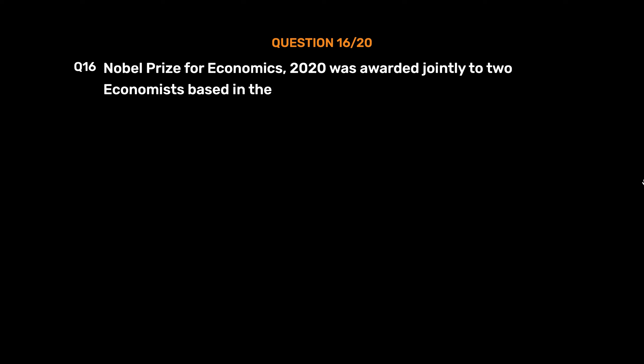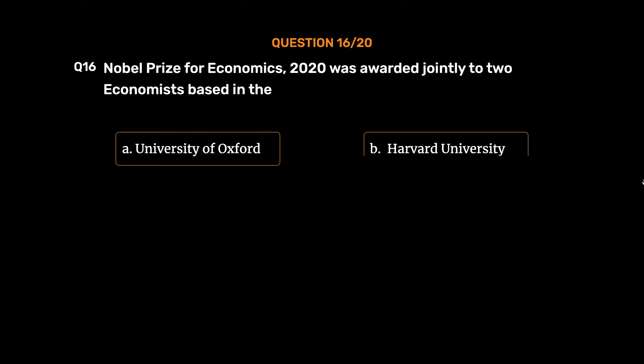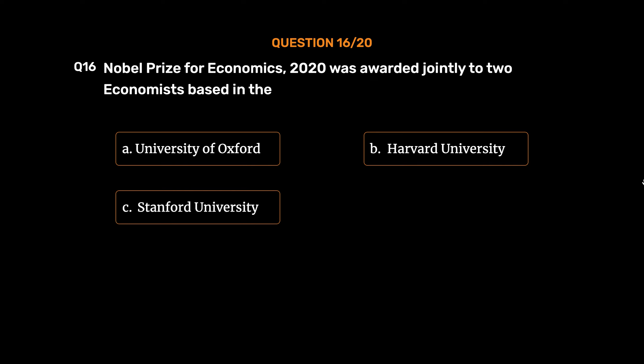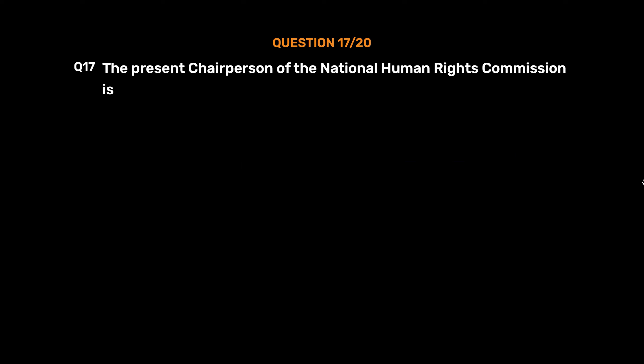Question No. 16: The Nobel Prize for Economics 2020 was awarded jointly to two economists based in the — Option A: University of Oxford. Option B: Harvard University. Option C: Stanford University. Option D: Yale University. The correct answer is Option C: Stanford University.